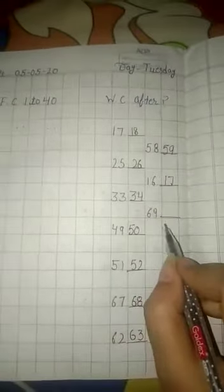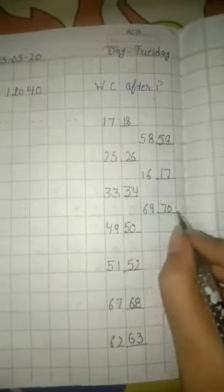Next is 6, 9, 69. After 69 comes 7, 0, 70.